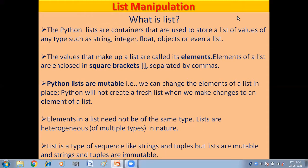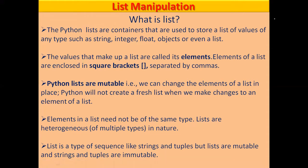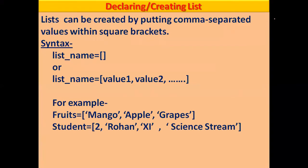These were the characteristics of a list. Now, declaring or creating a list: a list can be created by putting comma-separated values within square brackets. The syntax is: list_name = [] for an empty list, or list_name = [value1, value2, value3] to create a list with elements.